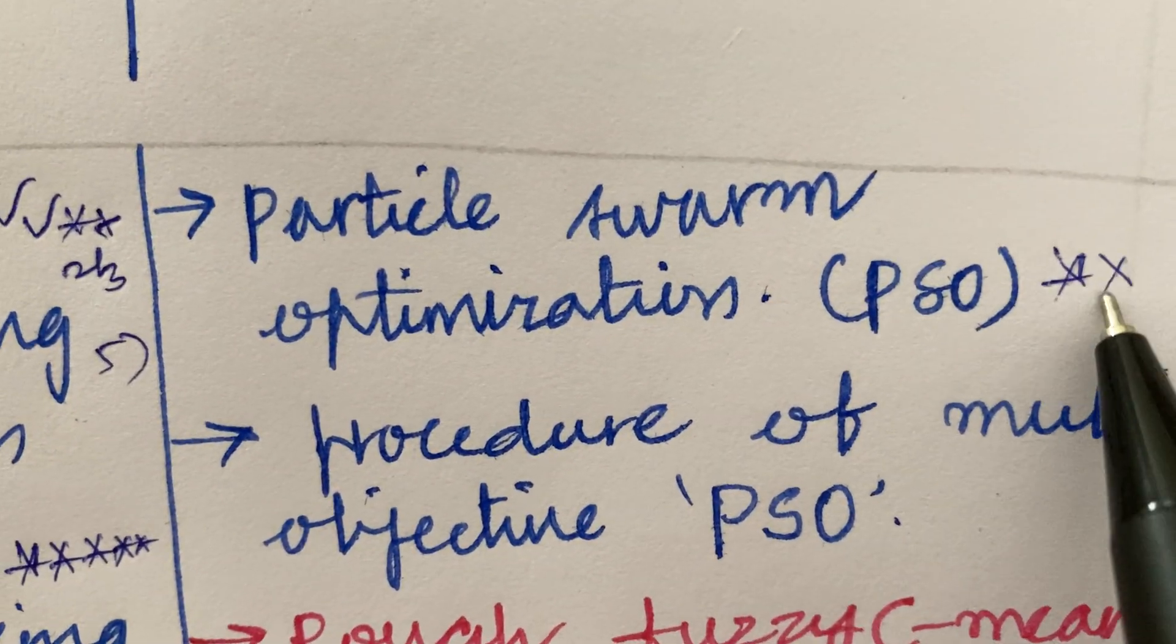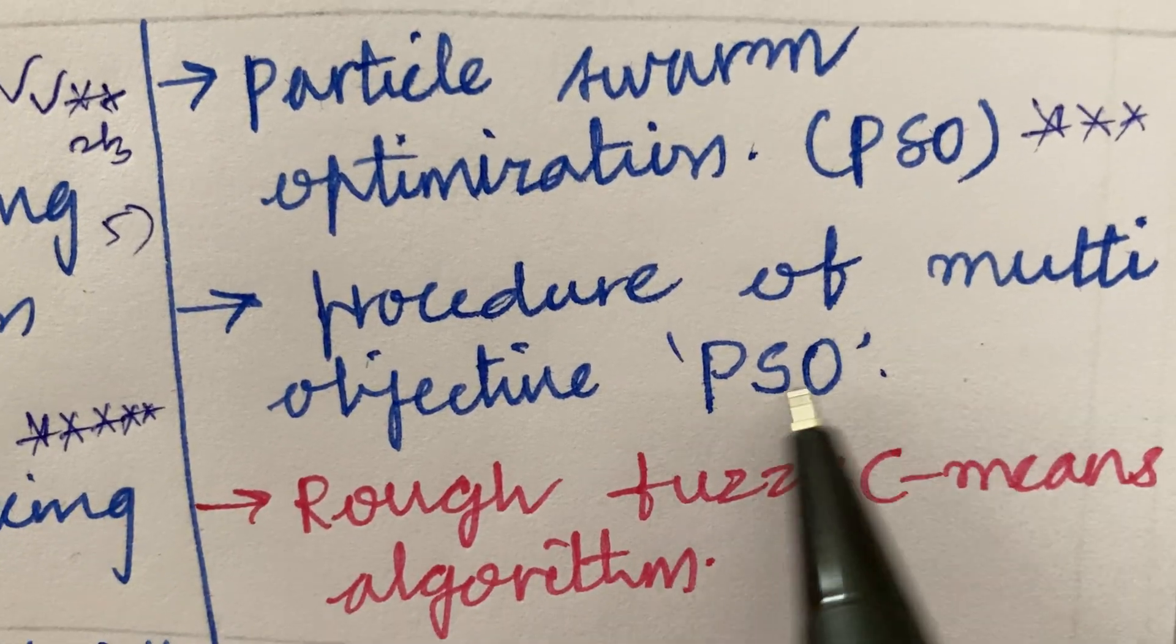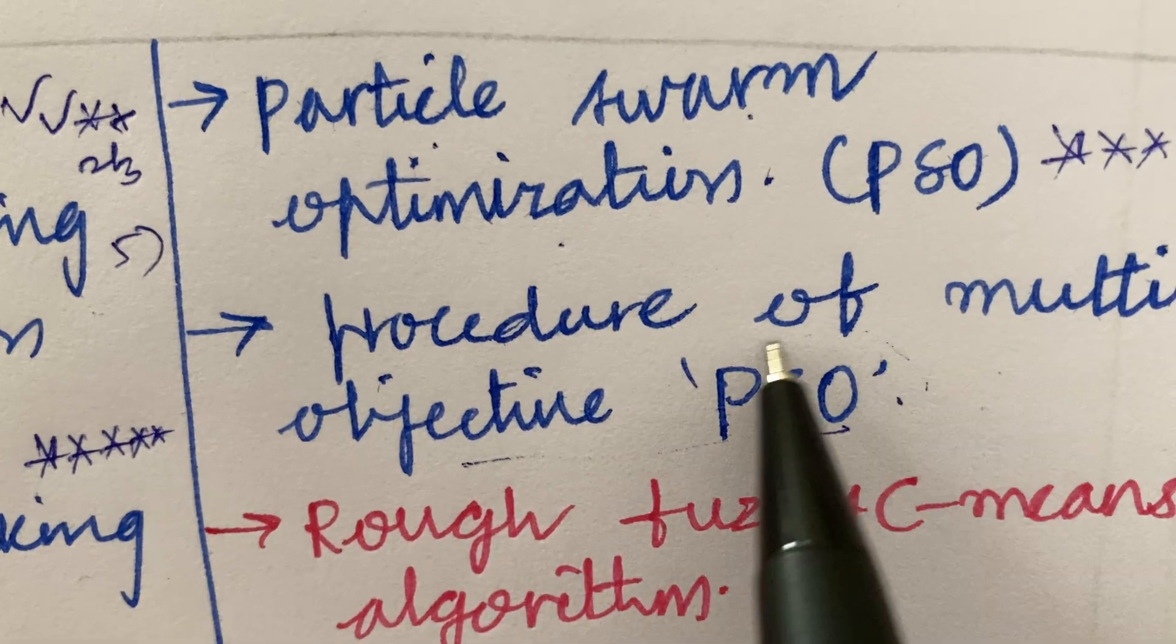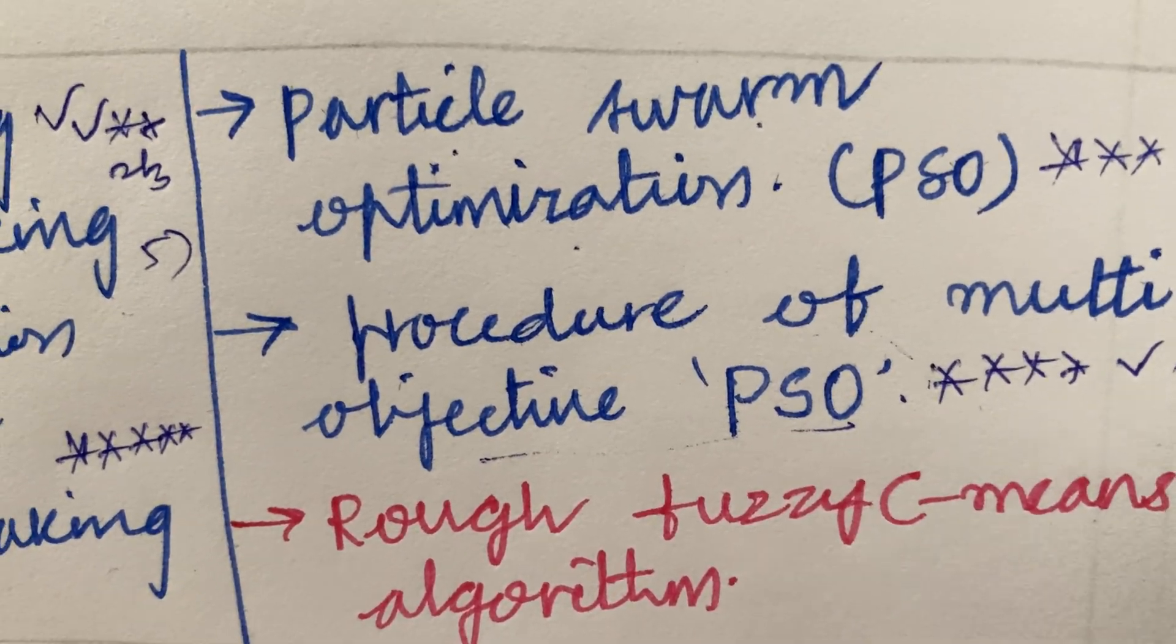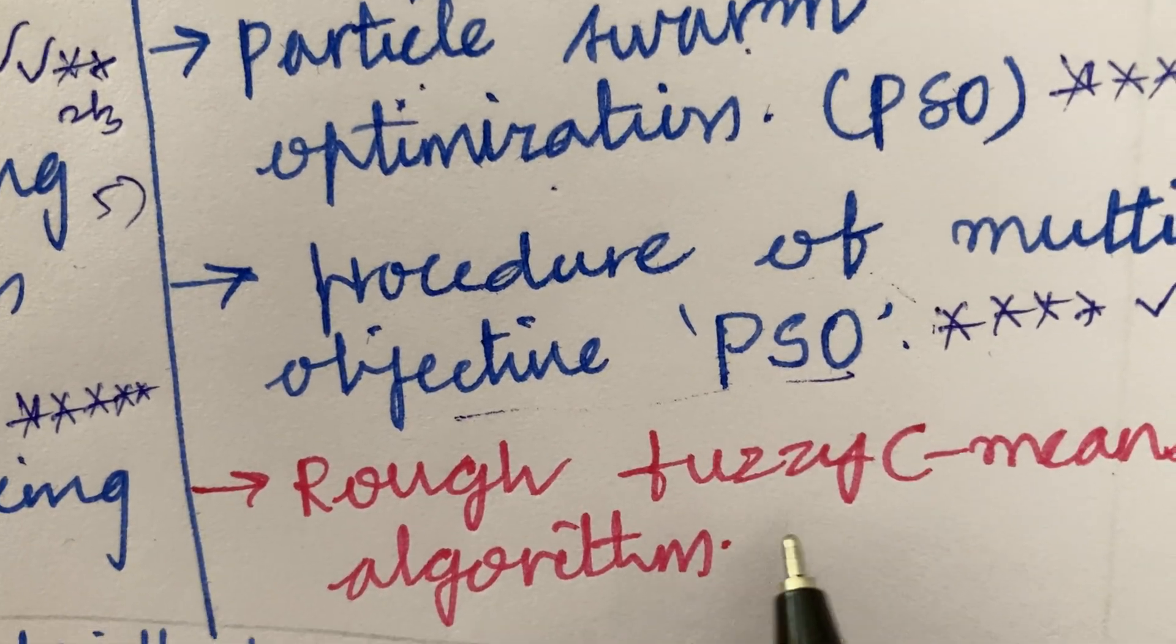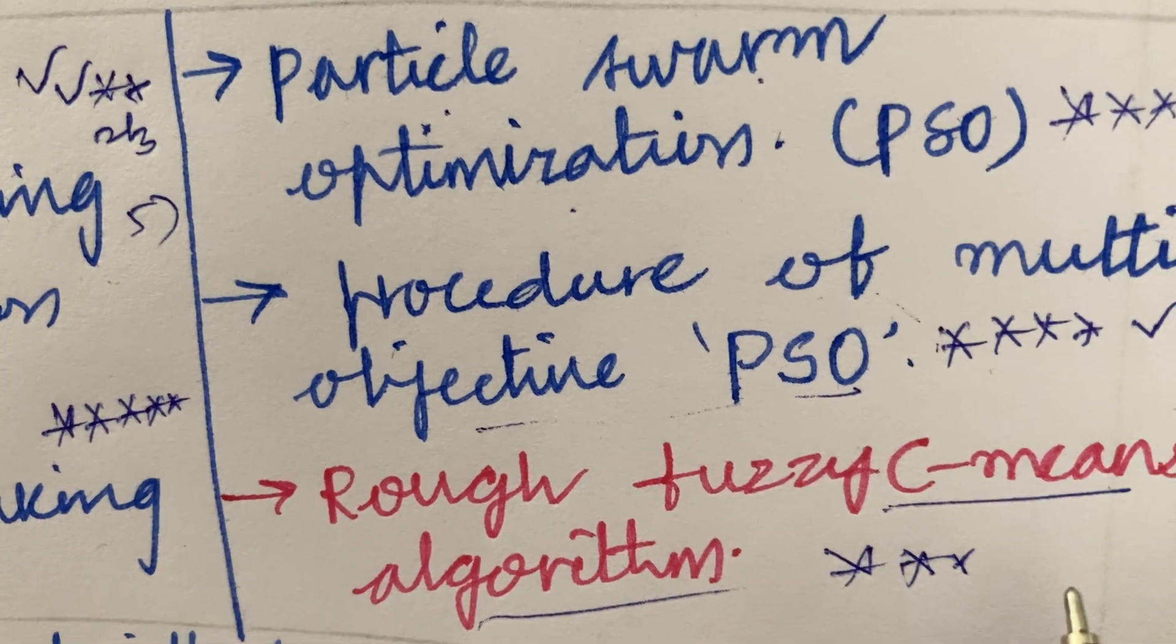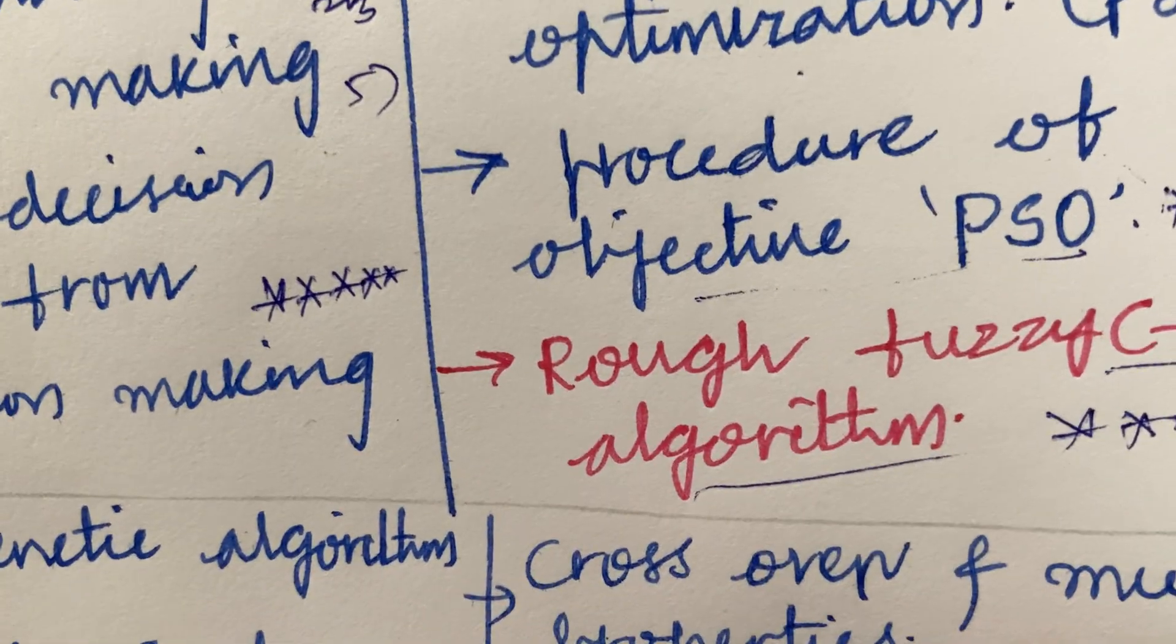Particle swarm optimization is said to be a B question from unit 3 and the procedure of multi-objective particle swarm optimization, I mean PSO, is said to be a topmost and gunshot question which is going to occur this time in your question paper. Rough fuzzy C means algorithm is also said to be a question. Hope you are working out very neatly all your exams by following my tips.